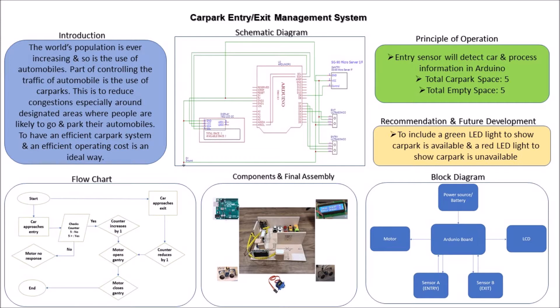We go to the flow chart — how this process works. When the car approaches the entry, the counter will check. If it shows 5, the motor will get no response and will not operate. If it is less than 5, the counter will increase by 1.